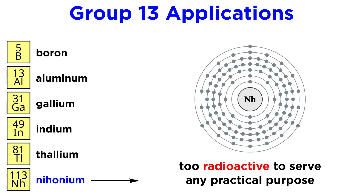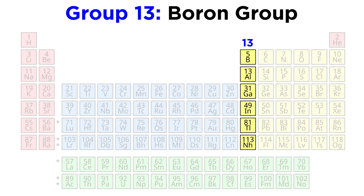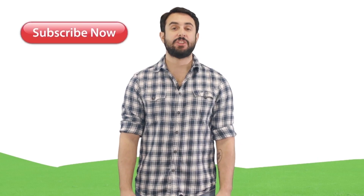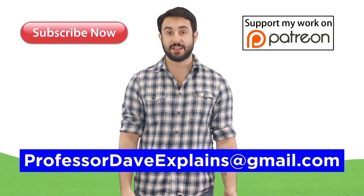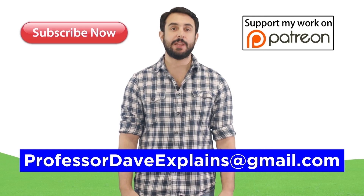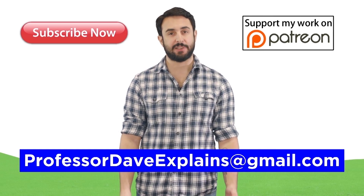And finally, as we said, nihonium is too radioactive to even be stored for any significant span of time, let alone have any real practical application. And with that we have completed our survey of group 13 on the periodic table. Thanks for watching. Subscribe to my channel for more tutorials. Support me on Patreon so I can keep making content, and as always, feel free to email me at professordaveexplains@gmail.com.